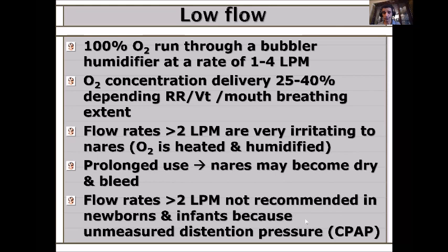Another problem with higher nasal flow — such as 4 L/min or more — is that it starts to deliver distension pressure, which is effectively unmeasured CPAP. This means you may cause airway stenting and air trapping without knowing. Whenever giving more than 4 L/min, remember there is a distension pressure being applied. You need humidification, temperature control, and awareness that unmeasured CPAP is being delivered.